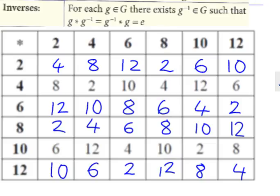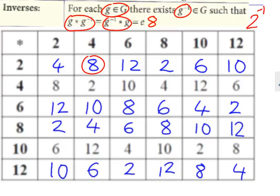Last one. Inverse. For each element in the set, there exists an inverse element which, when you combine it, it gives you the identity which was eight. So let's just choose one at random. Here's eight. Okay. That means the inverse of two is four. Now, try not to be intimidated by the notation here.